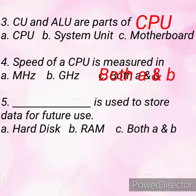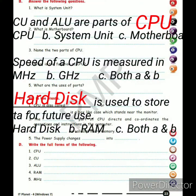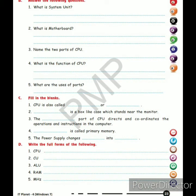Question five: dash is used to store data for future use. The options are A) hard disk, B) RAM, and C) both A and B. The full form of RAM is Random Access Memory. The correct answer is hard disk — hard disk is used to store data for future use.